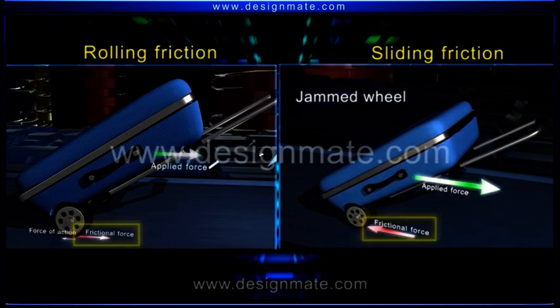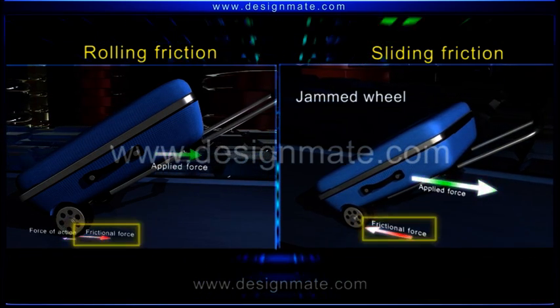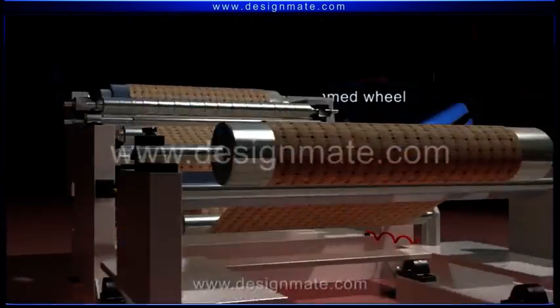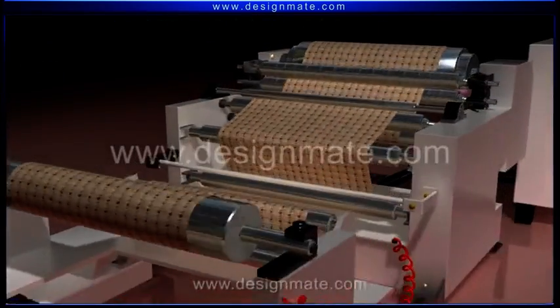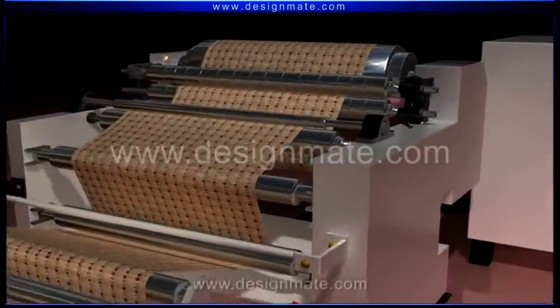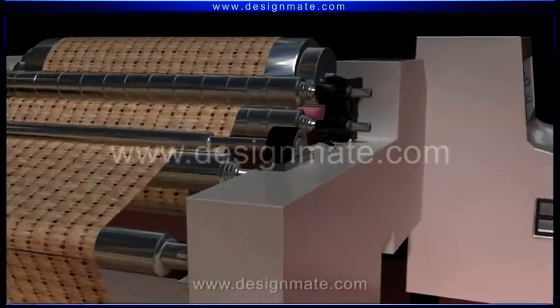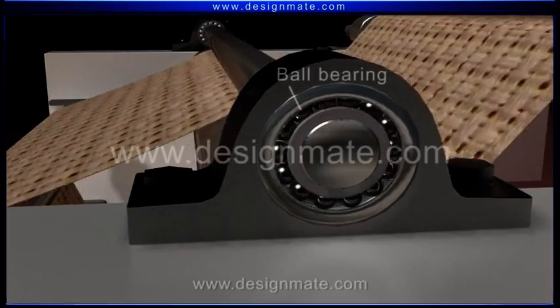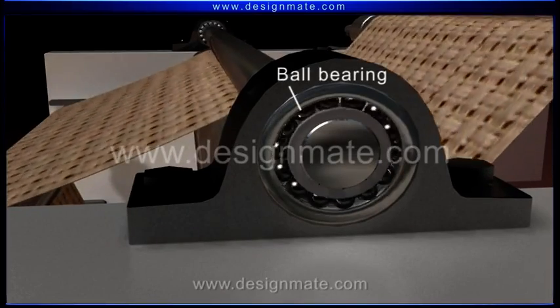As the rolling friction is much smaller than the sliding friction, in most machines, sliding is replaced by rolling with the help of ball bearings.